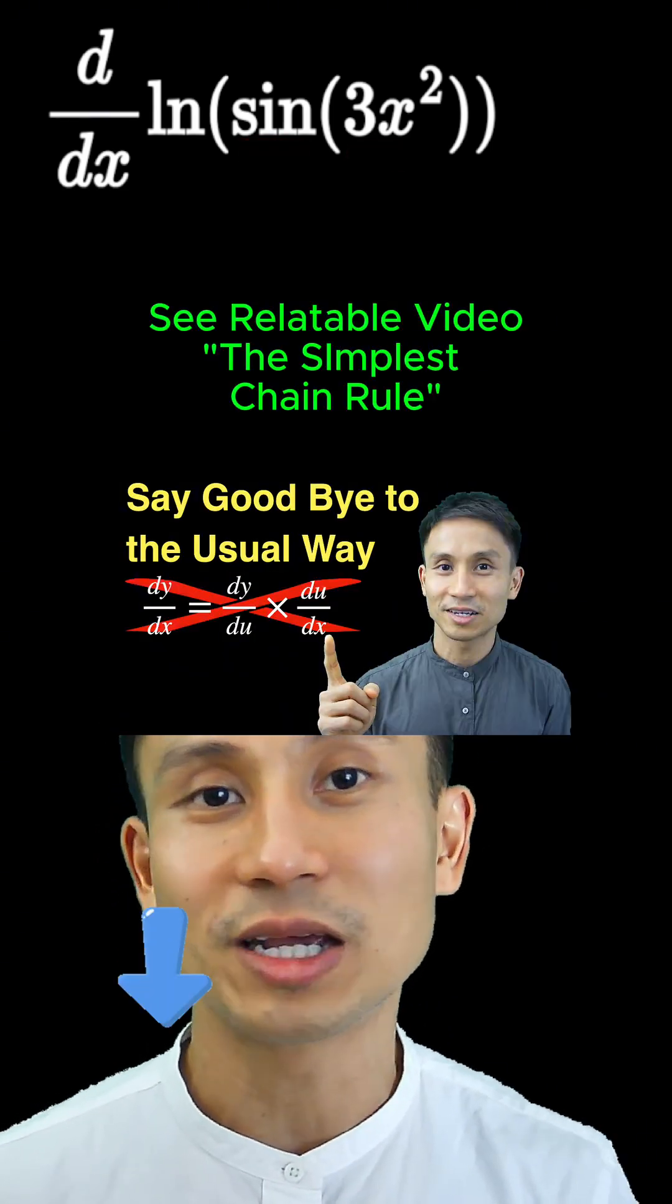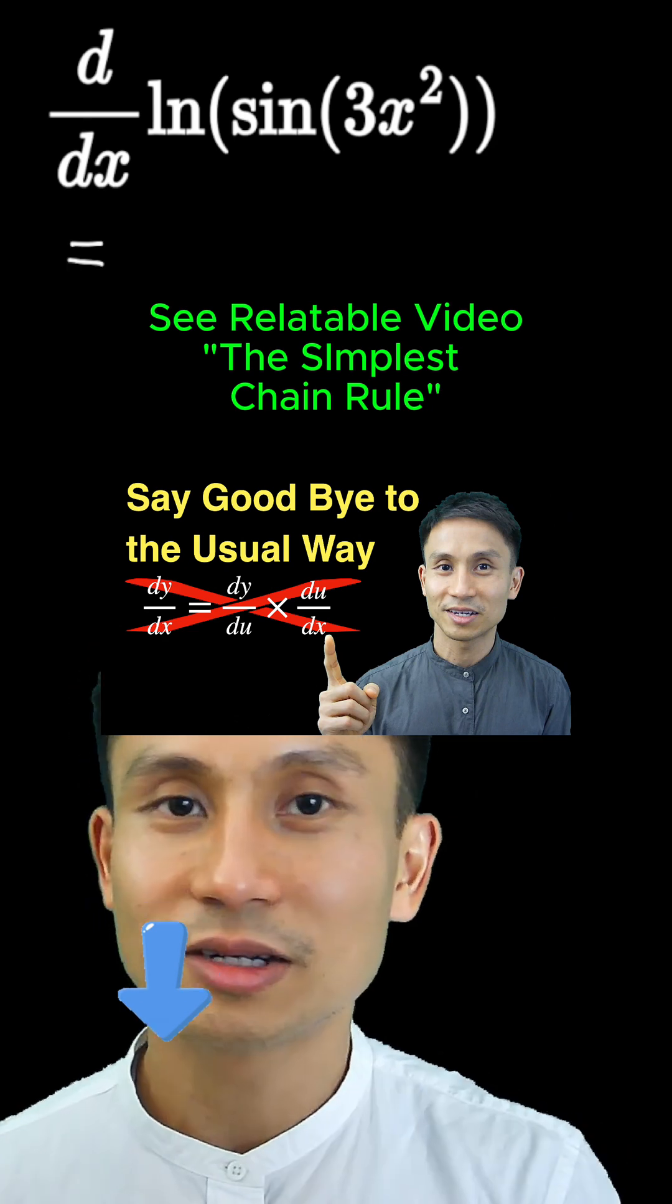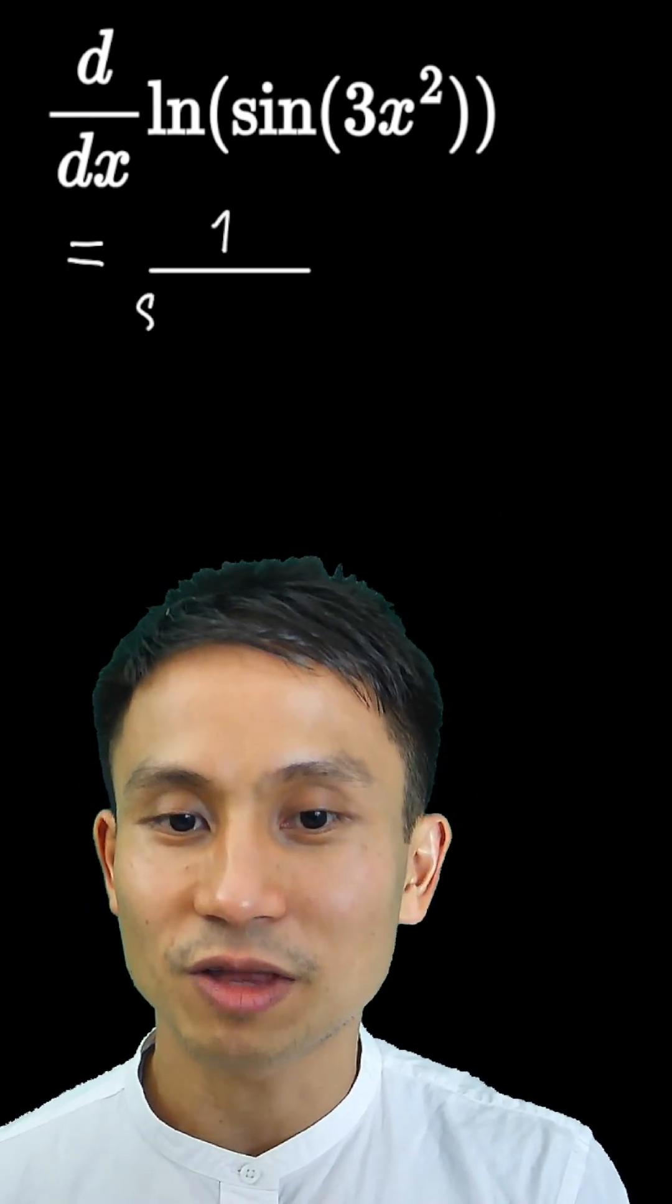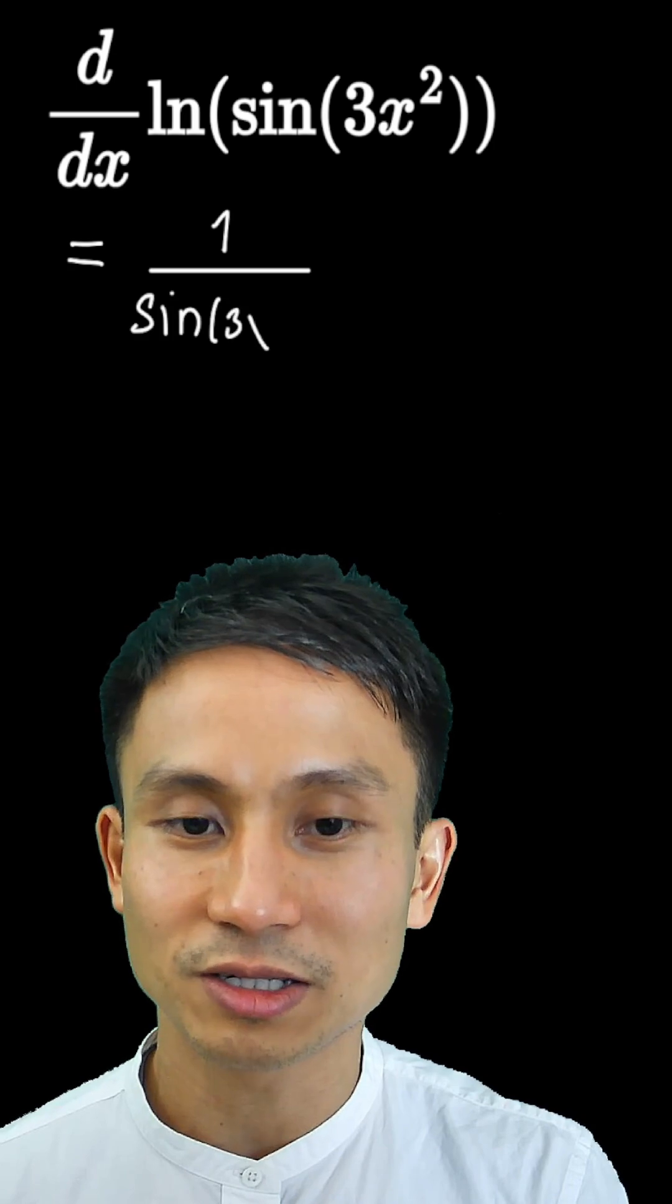When we do chain rule, we need to differentiate from the outside in. Differentiating ln, we get 1 over everything. We've got to keep everything inside ln the same first because this is a chain rule.